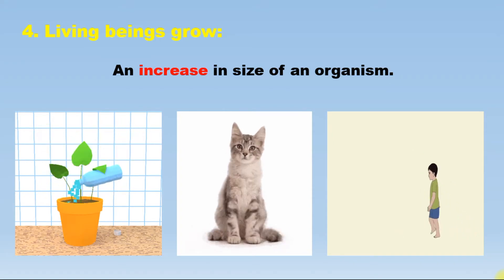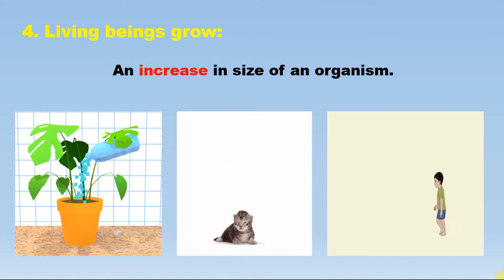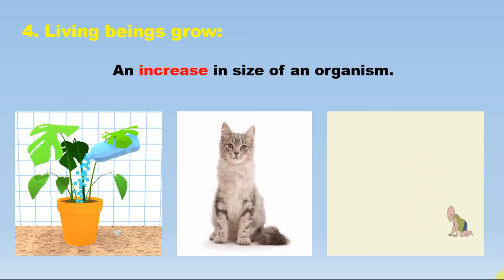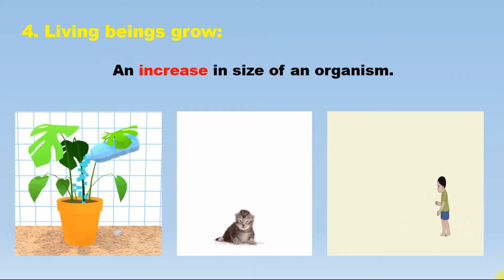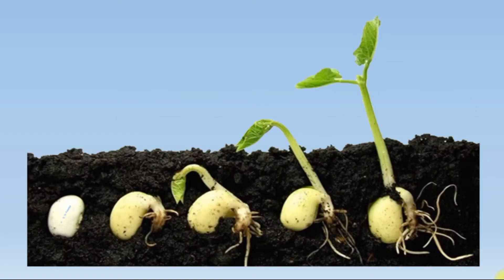For example, if the size of a plant, animal, or human increases, we say that there is some amount of growth. Focus into the picture here — these are pictures of the same person at each and every stage. There is an increase in height as well as size of the person, so this is called growth.